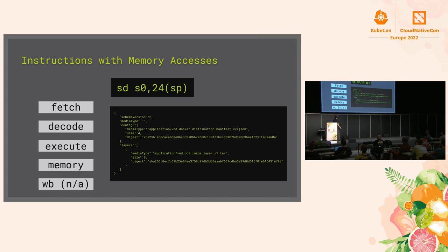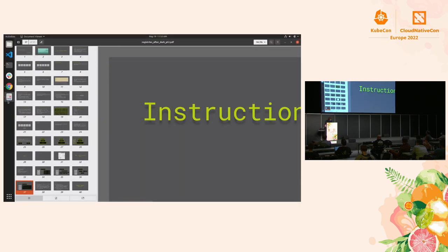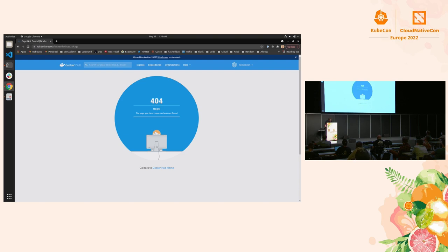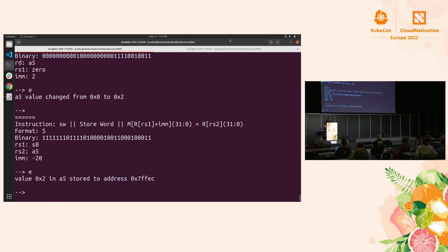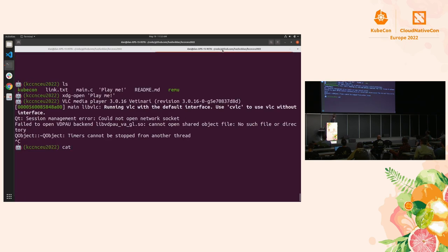The memory access step looks like an OCI manifest for an image with a single layer of only 8 bytes — because we're storing a 64-bit double word. We told a bit of a lie and said this is a filesystem image layer tarball. I don't know many 8-byte tarballs, but that's what we said. I posted a tweet with the public repository link so you can follow along and pull these images — the tags are the memory addresses we wrote to.